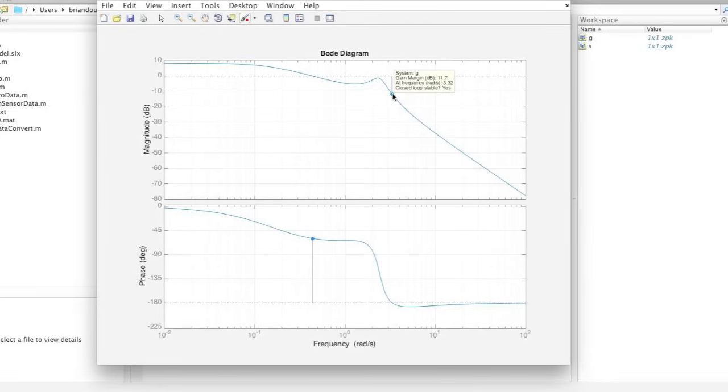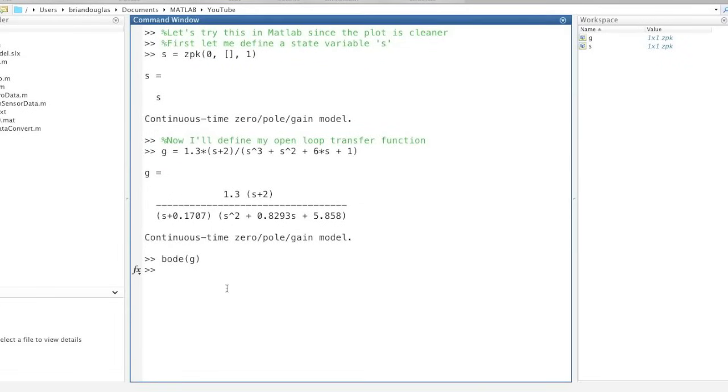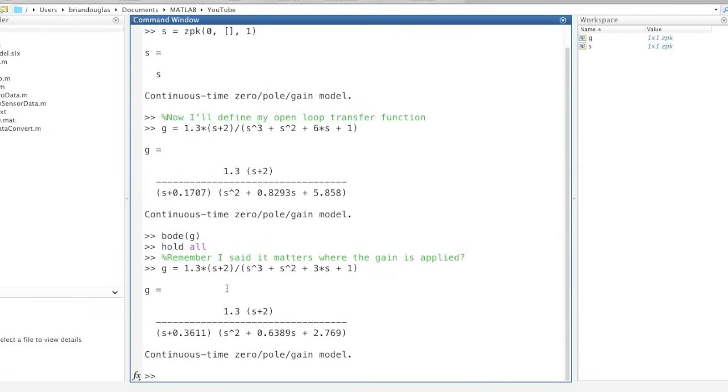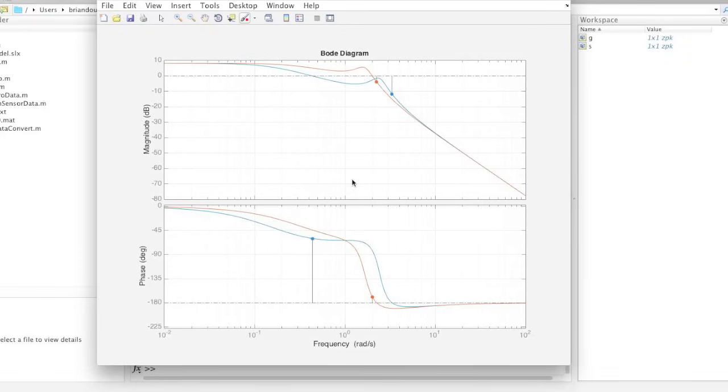Now while these numbers tell us a lot, and they are important, they don't tell us the whole stability margin story. If any one thing happens, either change in gain only or change in phase only, we know how much our system can handle before it goes unstable. But remember when I said it matters where the gain is applied. If the term in your system that you're unsure about is this one, then adjusting it does change the phase also. Let's cut it in half and see how it affects our system. And the plot looks very different.